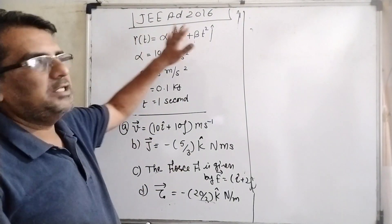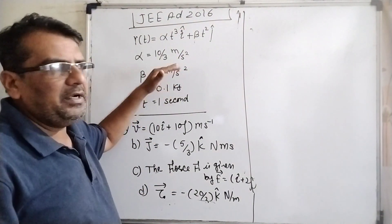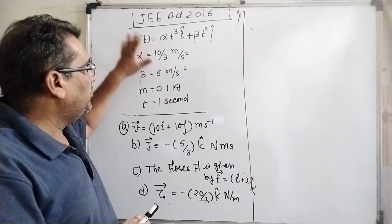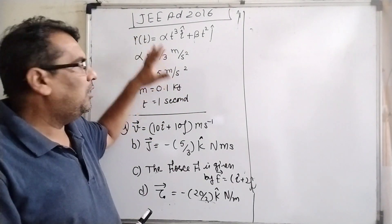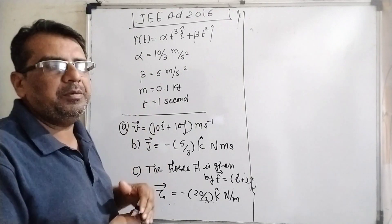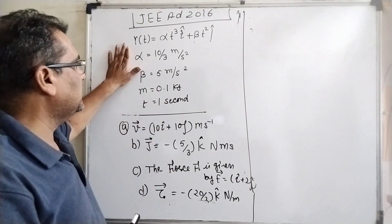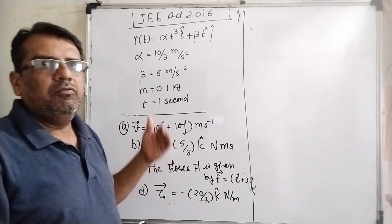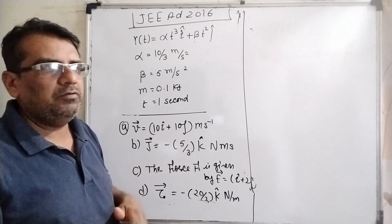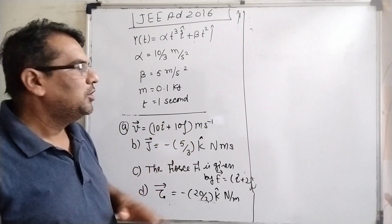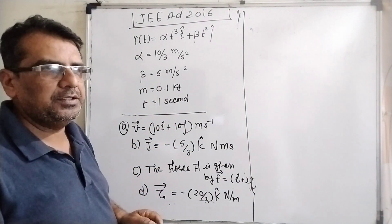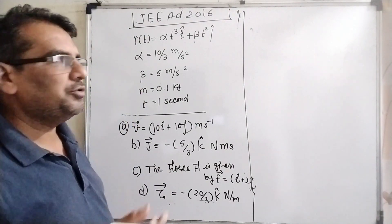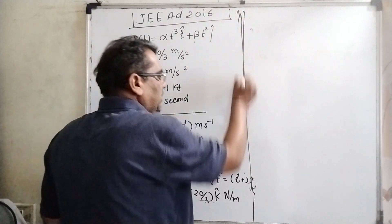You have given four options: velocity, angular momentum, force, and torque. This question is asked in JEE Advanced 2016 and is totally a mathematical based question because we have to apply derivatives. You know very well what is velocity: dr/dt. What is acceleration: dv/dt.